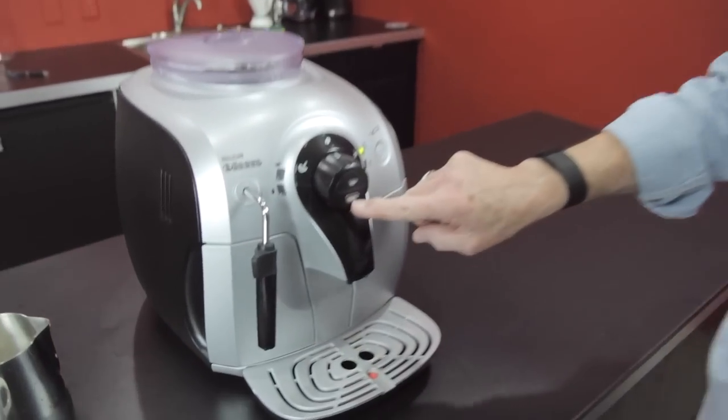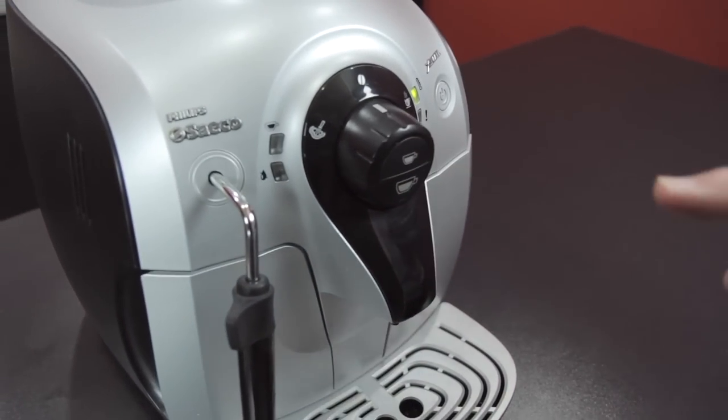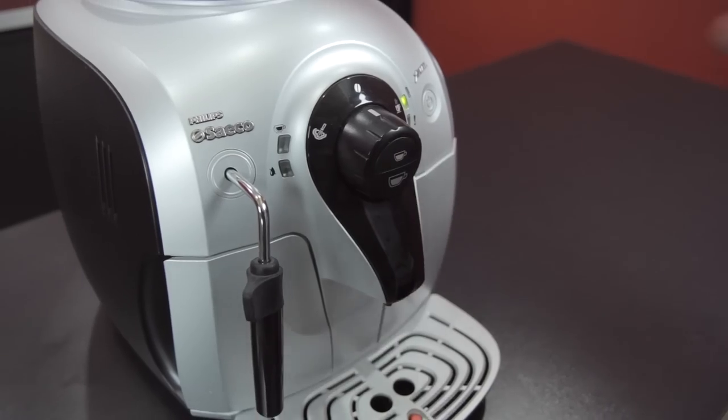Two programmable buttons right here. You can also, if you hit any one of these in rapid succession, it will grind and brew twice automatically for you. So if you want to double up on the single shot, you can do that.